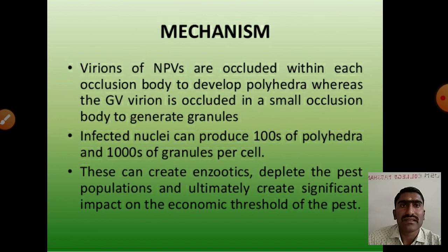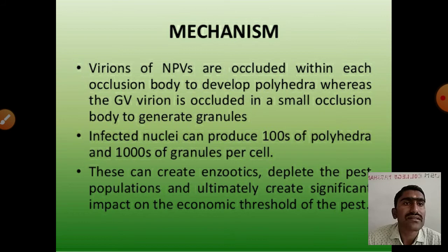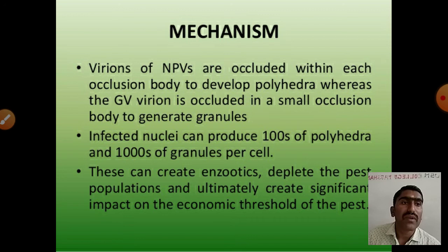Virions of NPVs are occluded within each occlusion body to develop polyhedra, whereas the GV virion is occluded in a small occlusion body to generate granules. Infected nuclei can produce hundreds of polyhedra and thousands of granules per cell. These can create epizootics, deplete the pest population, and ultimately create significant impact on the economic threshold of the pest.